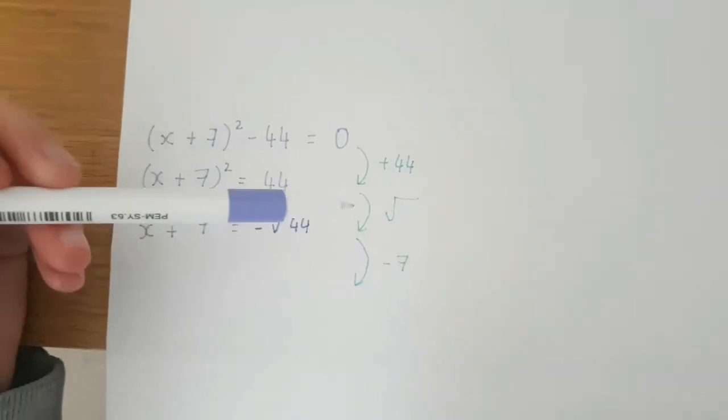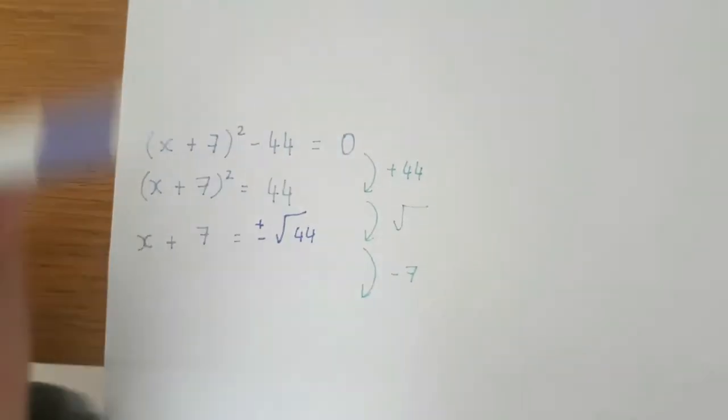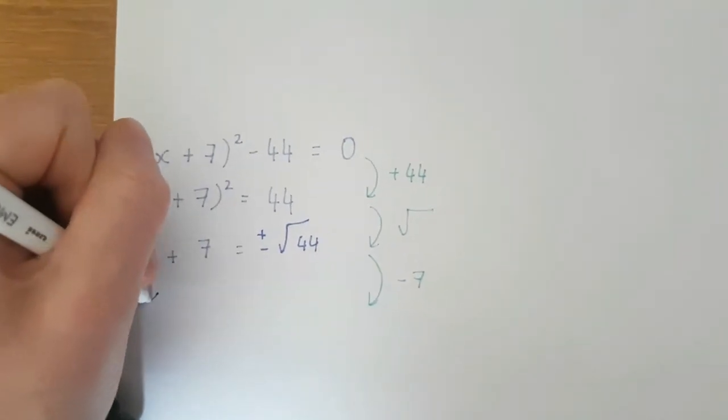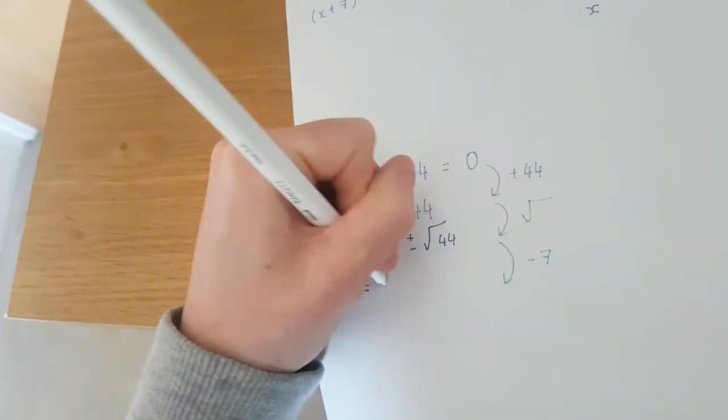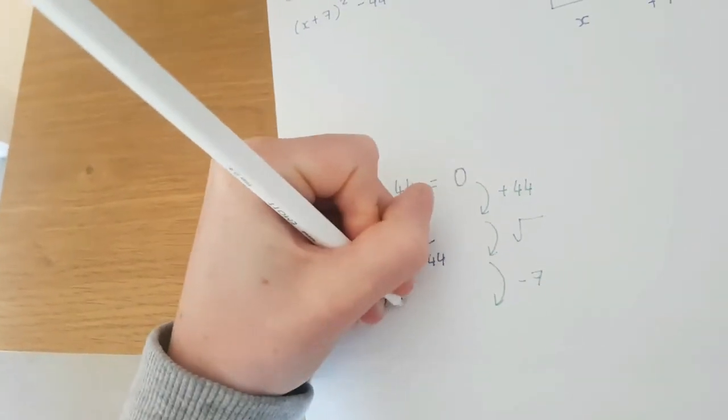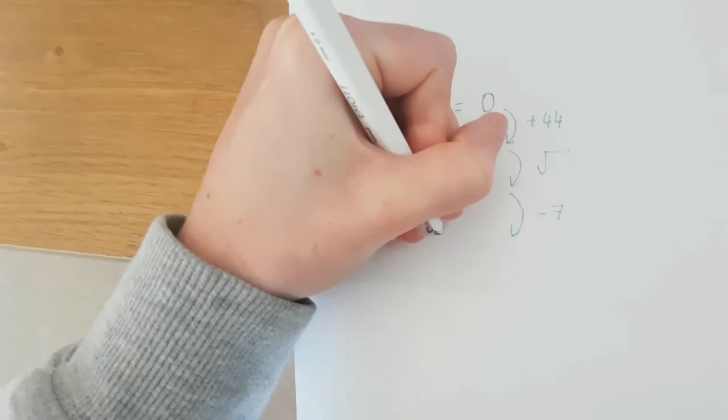I'm then going to subtract 7 from both sides so I have x = -7 ± √44 and that is my two solutions to this quadratic.